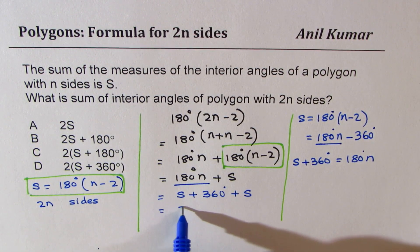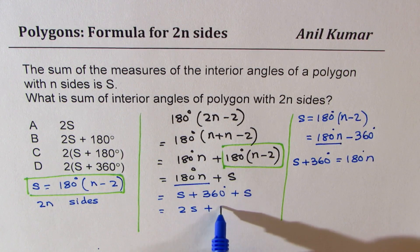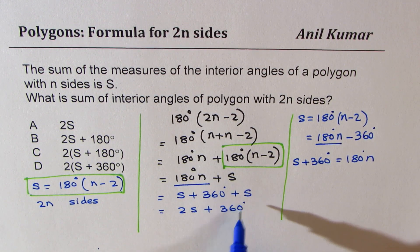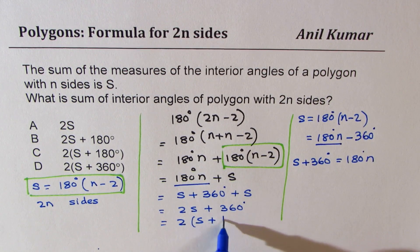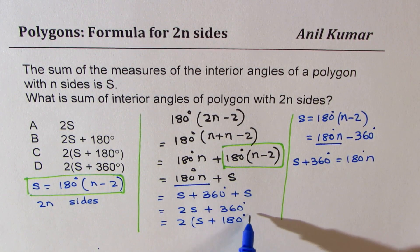So what we get is 2S plus 360 degrees. Now 2 is common factor. If you factor this out, you get 2 times S plus 180 degrees.